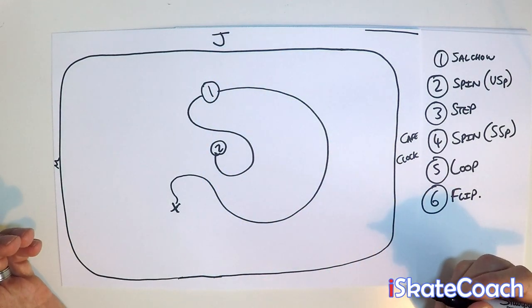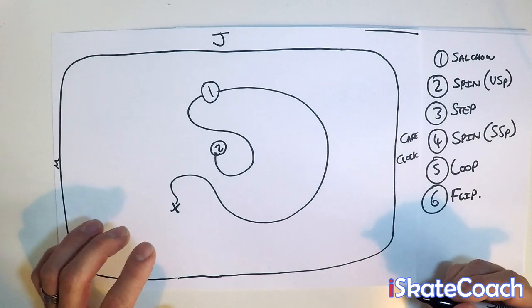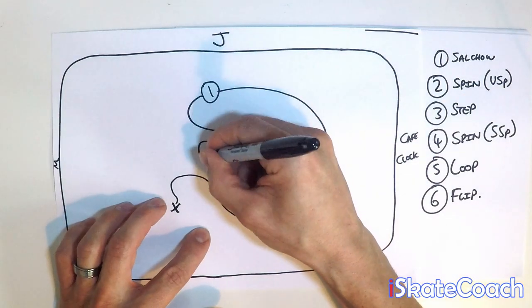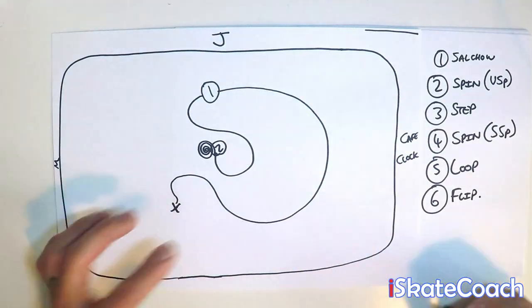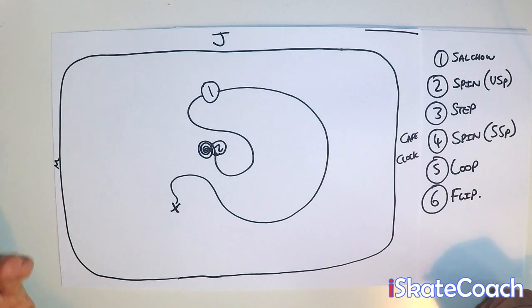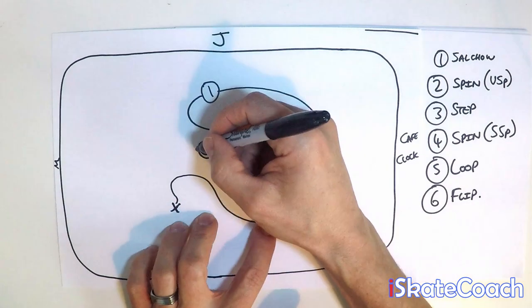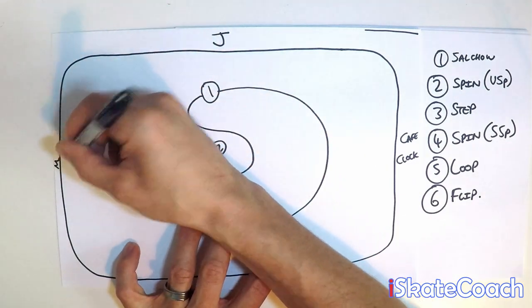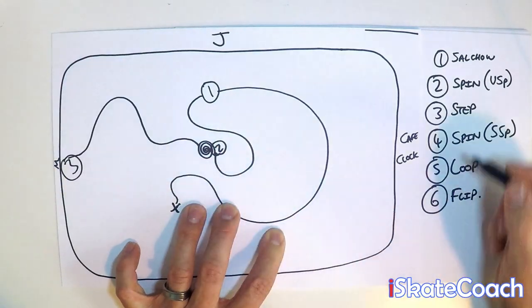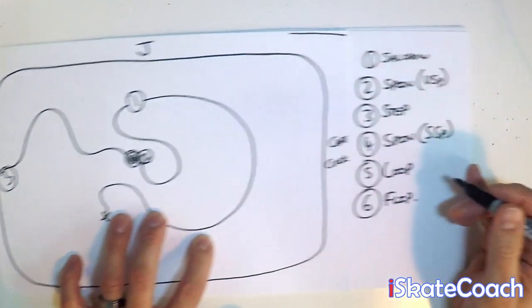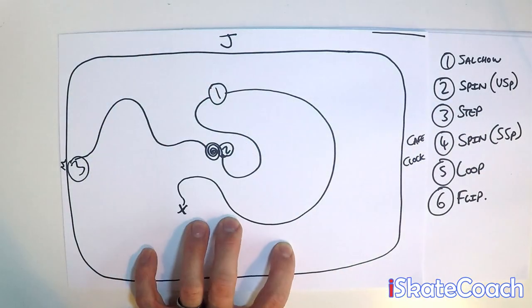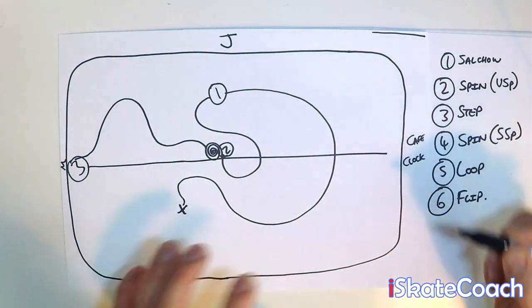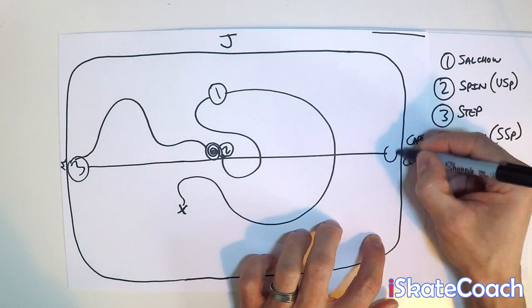Sometimes it's good to have symbols for some of your elements. I like to draw the spin as a little spiral and that's just visually I know that this is a jump and this is a spin. Then I work my way down out of this spin and into here for our number three which is our step sequence. There's different ways to do the step. I like to just draw the line. That's where I start. That's where I finish.